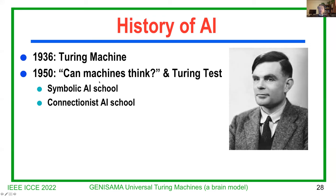Alan Turing proposed a machine and said it's not very meaningful to answer this question. He proposed a Turing test, and it's a totally symbolic AI school. I do not blame him, but he did mention network-like neurons. At that time, he already mentioned neurons. So the symbolic AI school and the connectionist school have at least as long a history since 1950.